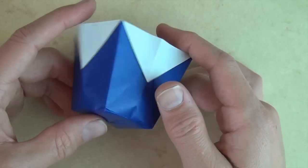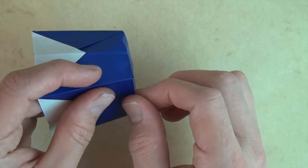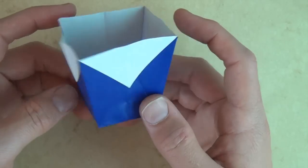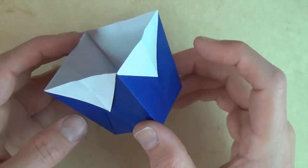So there it is. A simple origami trash can or garbage can or plant box. So there you have it. And now you have to figure out what to put inside. All right. See you later. Bye.